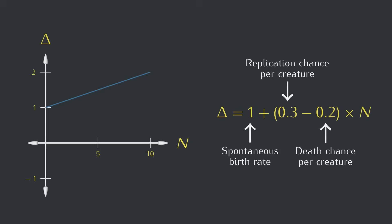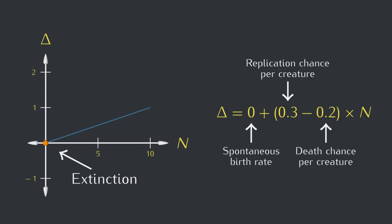Now, let's finally set that spontaneous birth rate to zero. We still have that reverse rubber band effect, where the expected change gets bigger and bigger, but if the population is ever zero, it gets stuck. There are no creatures to replicate, and none are going to be born spontaneously. This is called extinction. It's over for those creatures.